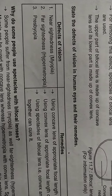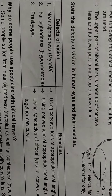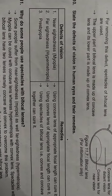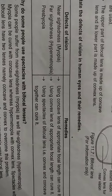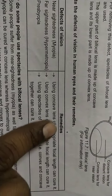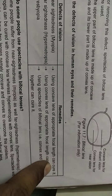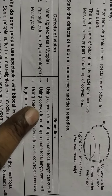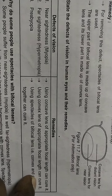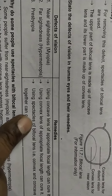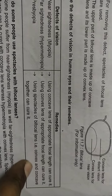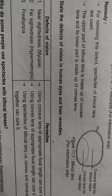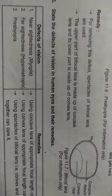Next question: state the defects of vision in the human eye and their remedies. In short: the first defect is nearsightedness (myopia) — using a concave lens of appropriate focal length can cure it. The second defect is farsightedness (hypermetropia) — using a convex lens of appropriate focal length can cure it. For presbyopia, using spectacles of bifocal lens (convex and concave together) can cure it.